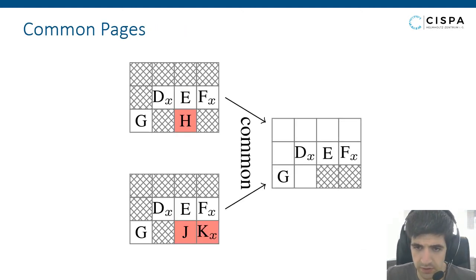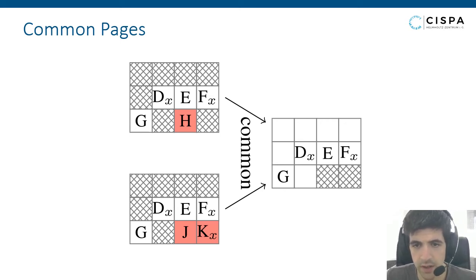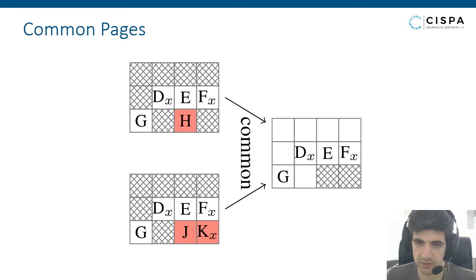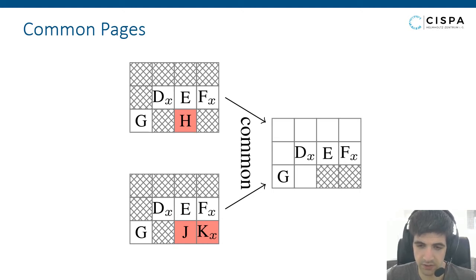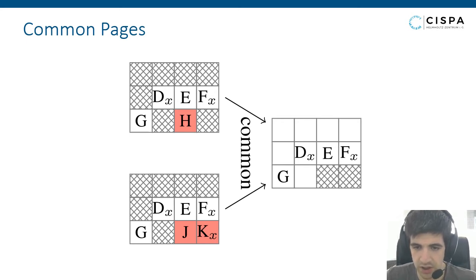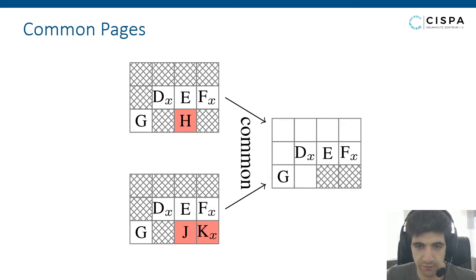The next step is called the common step — a very simple but central step. Here we abstract from background noise of the operating systems by only considering memory pages that are shared in both memory dumps, filtering out pages not shared, which we consider OS noise. In the first memory dump, H is not shared with the second; J and K of the second are not shared with the first. Therefore H, J, and K are considered noise, and we keep D, E, F, and G. The offset at which they appear does not matter.